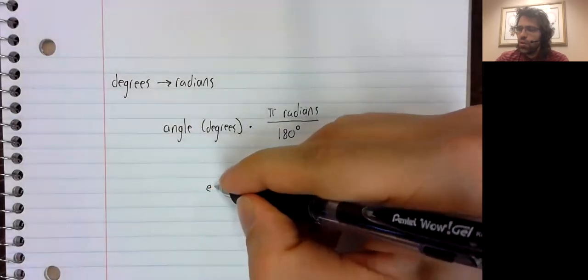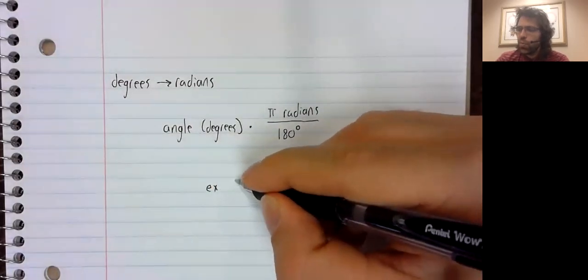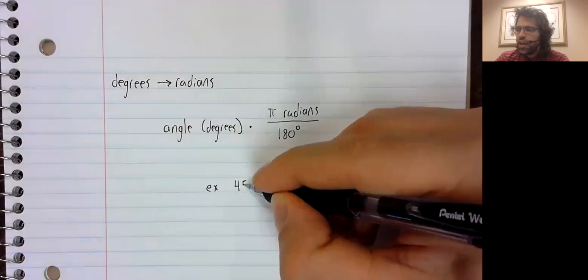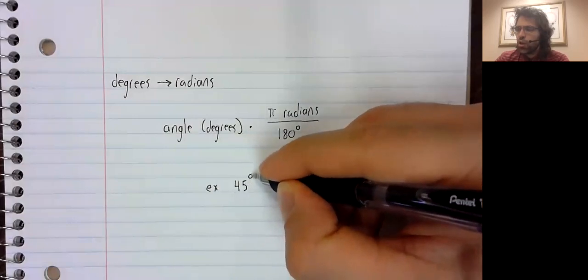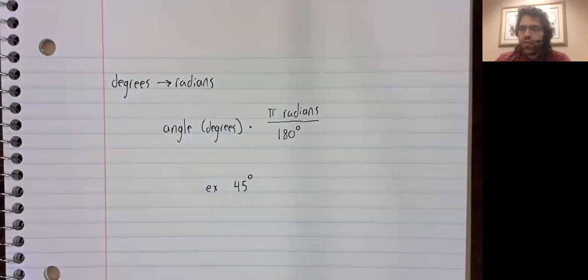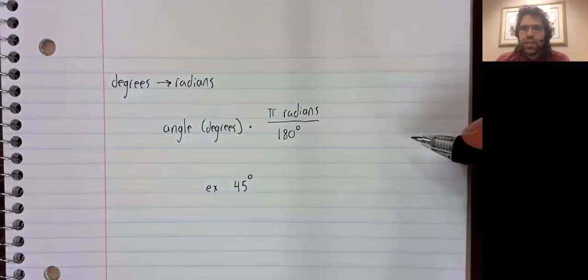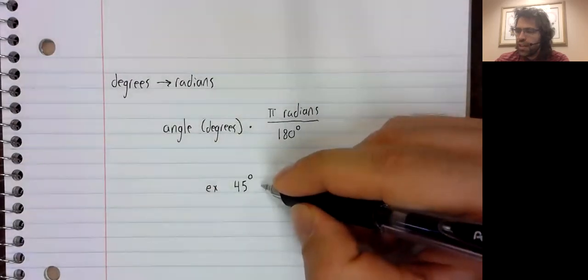So, for example, one of the angles on the chart I showed you was that 45 degrees is pi divided by 4 radians.